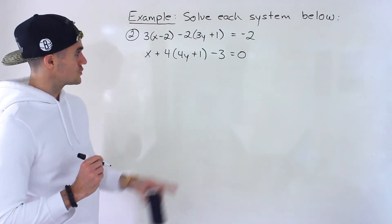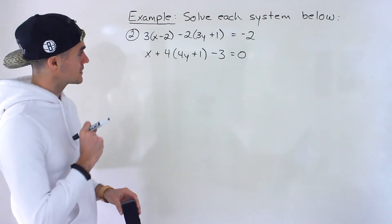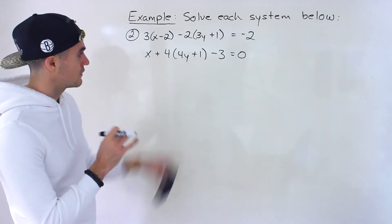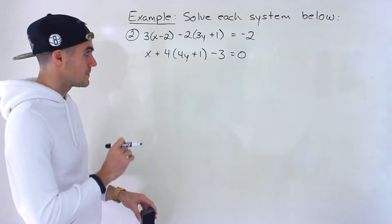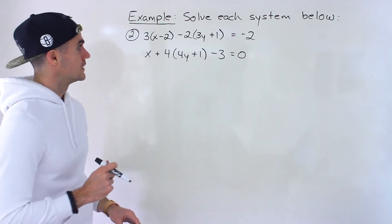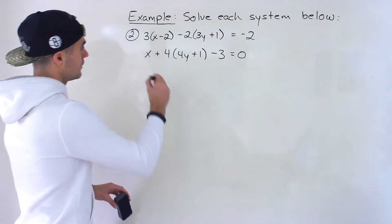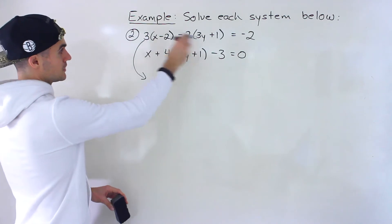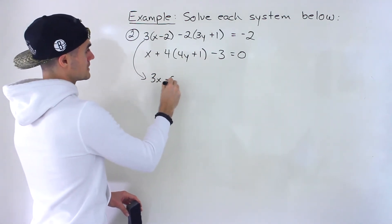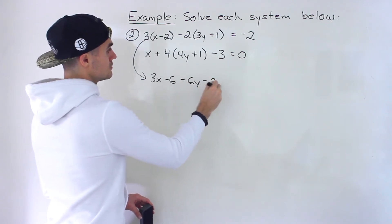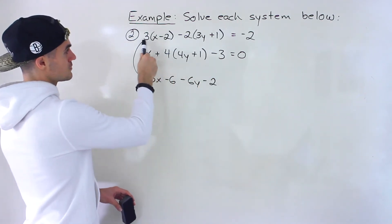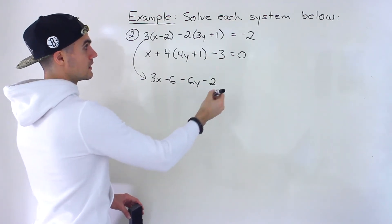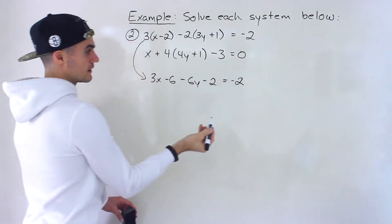Moving on to number 2 — same sort of thing. We have 3 bracket (x minus 2) minus 2 bracket (3y plus 1) equals negative 2, and x plus 4 bracket (4y plus 1) minus 3 equals 0. Same approach: we want to first take each equation and simplify by distributing everything.